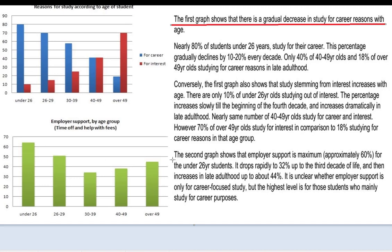The second graph is given an overview here. I'm not sure why the writer has decided to split the overview in two. It would be better to give an overview of both graphs right at the beginning instead of doing this. And again, here in the overview of the second graph, they give analysis — that's not necessary. Don't analyze the numbers in your overview.